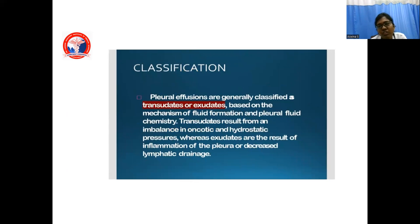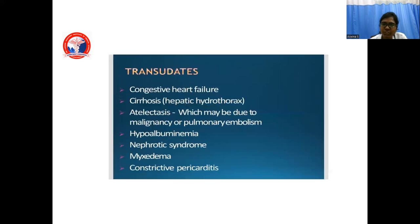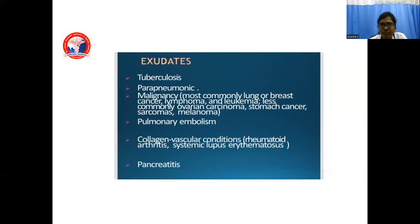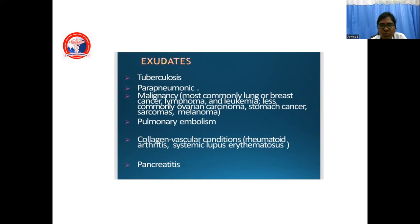Pleural effusion is generally classified as transudate or exudate based on the mechanism of fluid formation and pleural fluid chemistry. Transudate results from imbalance in oncotic and hydrostatic pressure, whereas exudate results from inflammation of the pleura or decreased lymphatic drainage. Transudative pleural effusions are seen in congestive heart failure, cirrhosis, hepatic hydrothorax, atelectasis — which may be due to malignancy or pulmonary embolism — hypoalbuminemia, nephrotic syndrome, myxedema, and constrictive pericarditis. Exudative pleural effusions are seen in tuberculosis, parapneumonic effusion from any infectious etiology, and malignancy — most commonly lung or breast cancer, lymphoma and leukemia, less commonly ovarian, GI, sarcomas, and melanoma — pulmonary embolism, collagen vascular conditions such as rheumatoid arthritis, systemic lupus erythematosus, and pancreatitis.